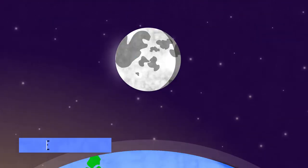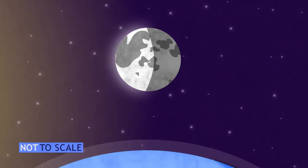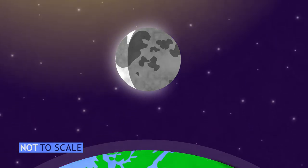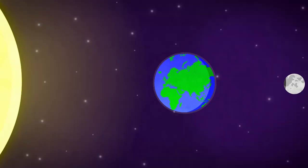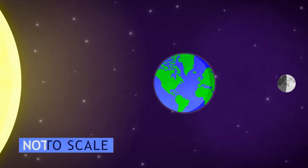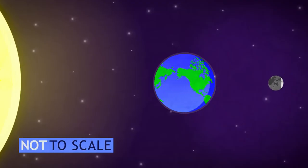We are used to seeing the moon go through phases which are caused by the changing angle of the sun and not the shadow of the Earth. But during an eclipse, we see the moon slowly disappear as the Earth blocks sunlight from reaching it.